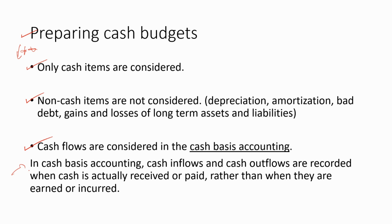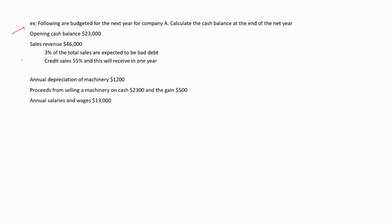Now let's do an example question so that you can understand these points clearly. The following are budgeted for the next year for Company A. We have to calculate the cash balance at the end of the next year. These are the transactions for the next year, and we have to calculate the cash balance at the year end.